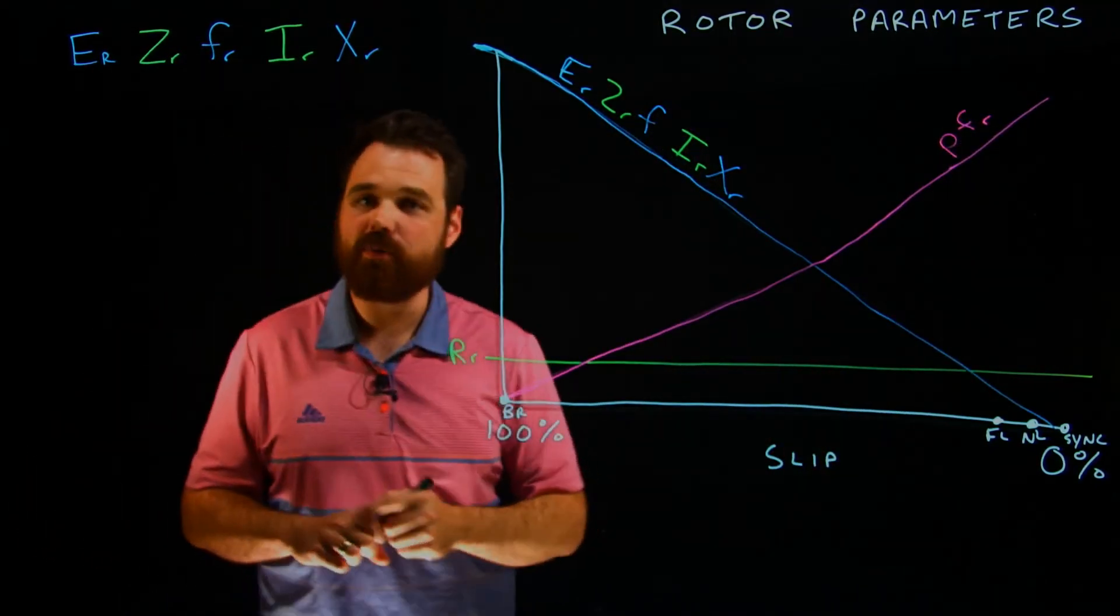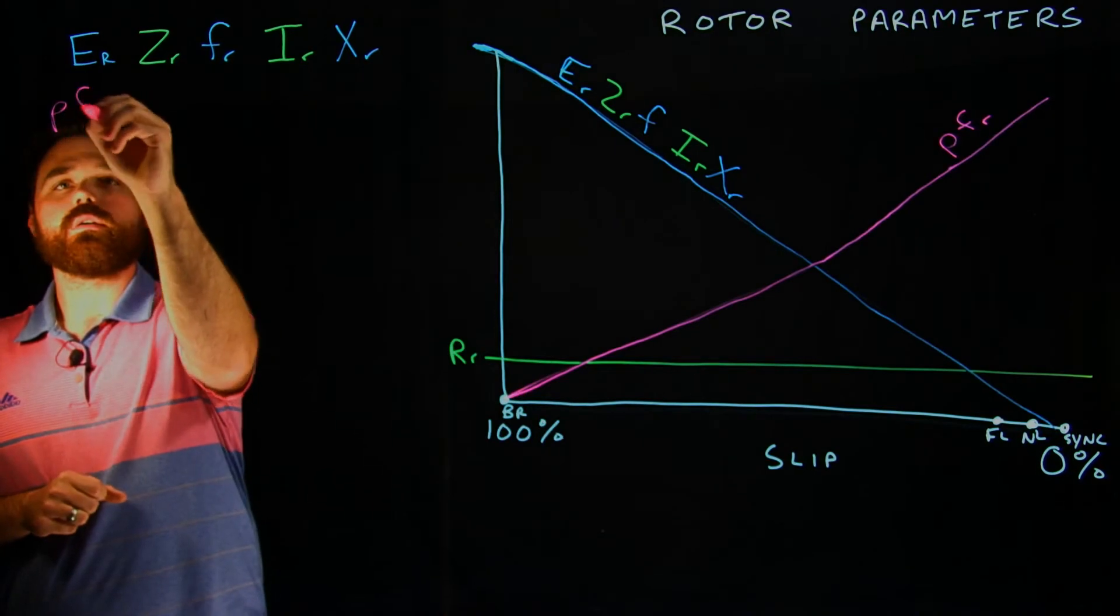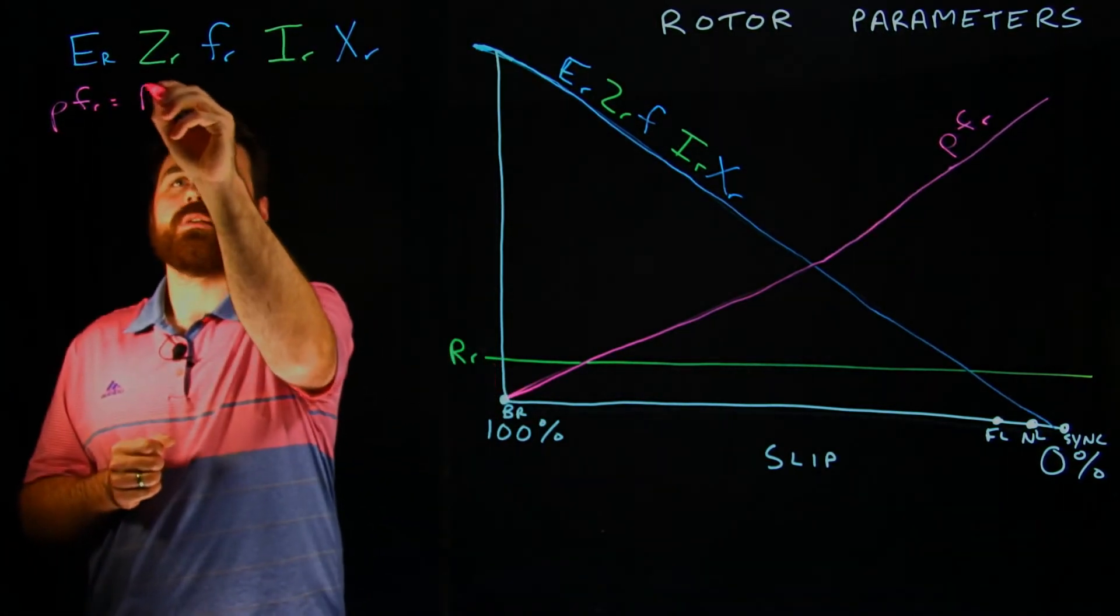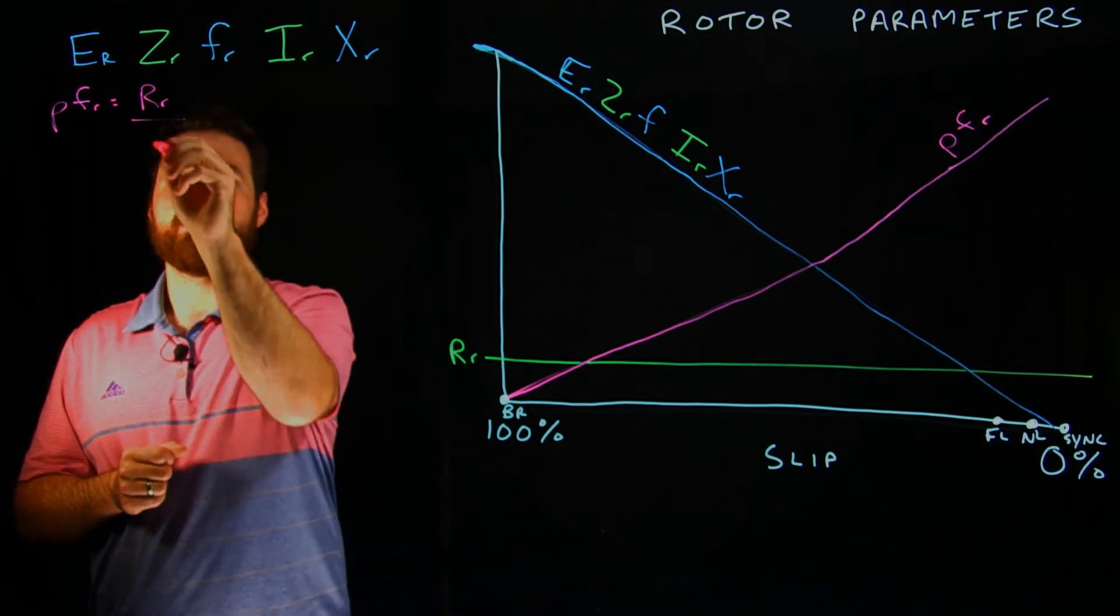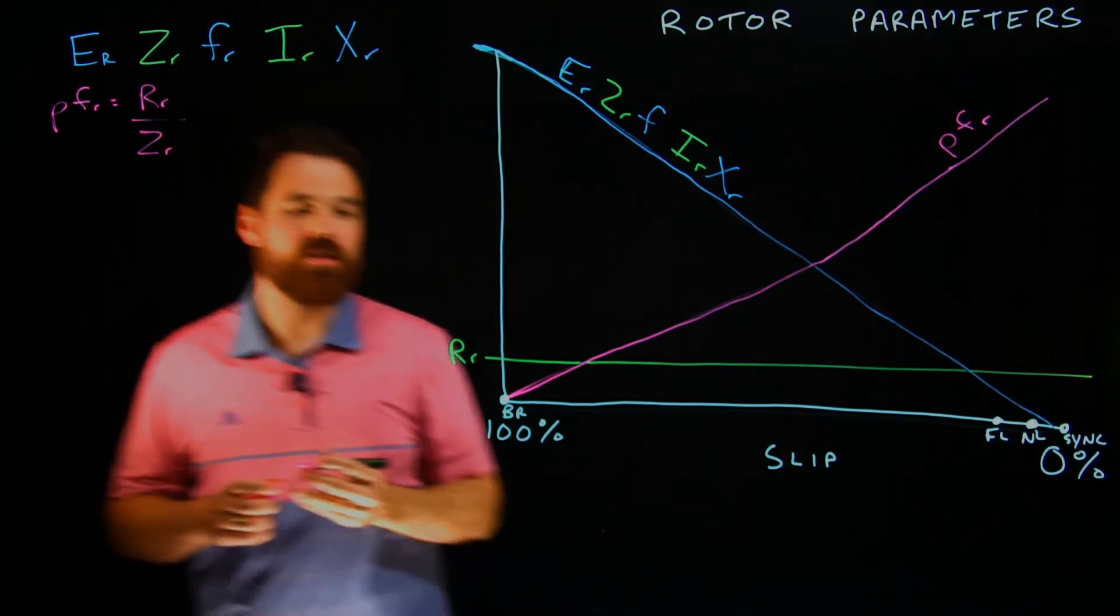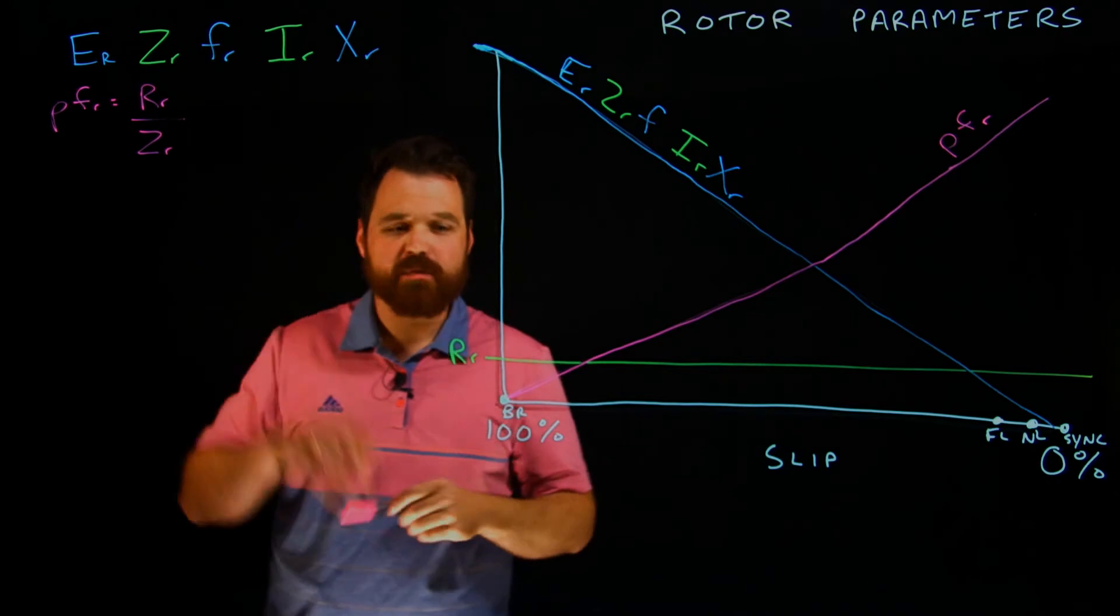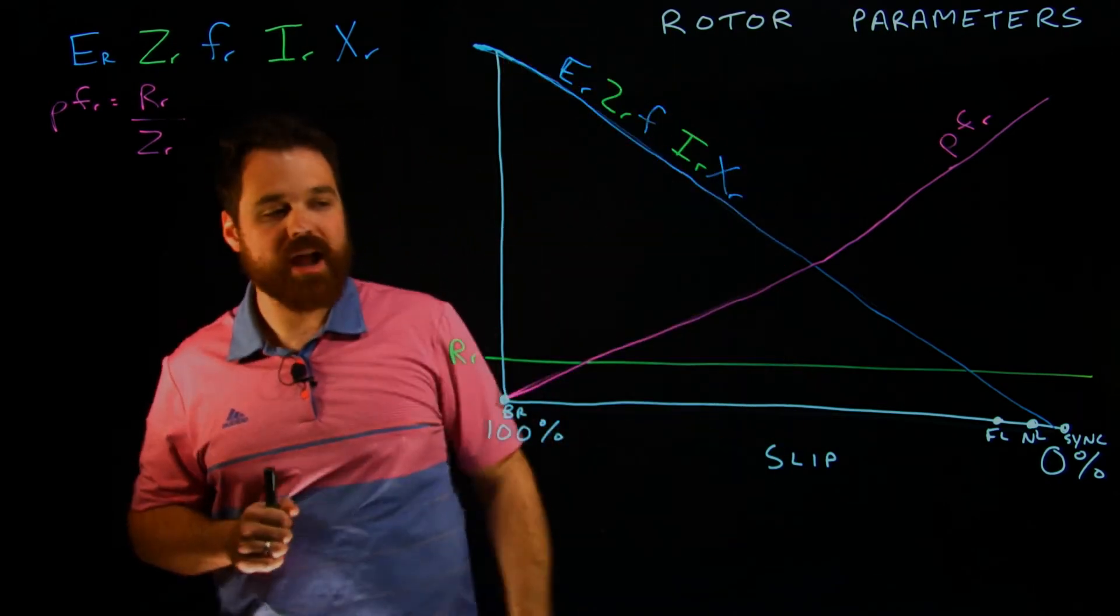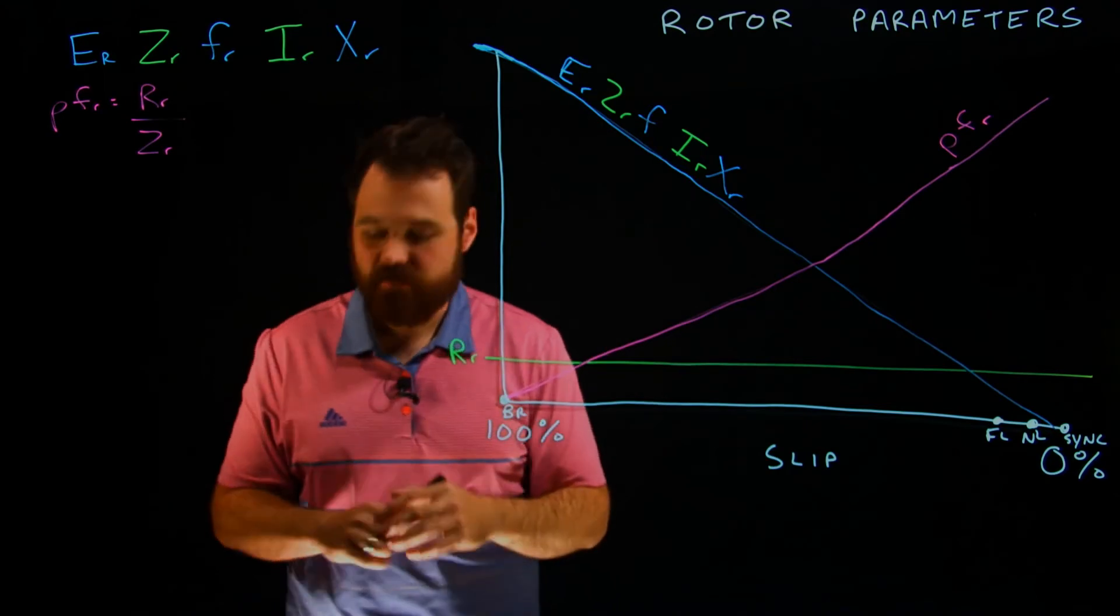And that power factor of the rotor is typically based upon the resistance of the rotor and the impedance of the rotor. So it would actually be increasing as those values go down because they're going down at different rates.